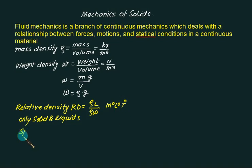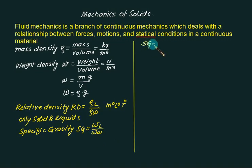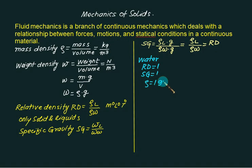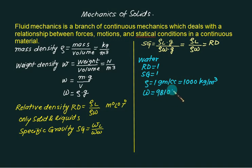Then we have specific gravity, denoted by Sg. It is the specific weight of any liquid divided by the specific weight of water, and is again dimensionless. Specific weight of liquid equals density of liquid multiplied by g, divided by density of water multiplied by g. The g values cancel, so specific gravity equals density of liquid divided by density of water — numerically equal to relative density. For water, Rd equals 1, Sg equals 1, density is 1 gram per cc, which equals 1000 kg per meter cube, and specific weight is 9810 Newton per meter cube.